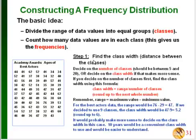To actually construct a frequency distribution, the basic idea is to divide your whole range of data values into equal groups or classes, and then count how many data values are in each class — this gives us the frequencies. The first step is to find your class width. Most homework problems tell you what class width to use, but a good rule of thumb is to have between 5 and 20 classes. If you decide on the number of classes first, find the class width by taking the range — the largest data value minus the smallest — and dividing by the number of classes. This gives an approximate class width that you'll need to round up to the next whole number to cover all data values.